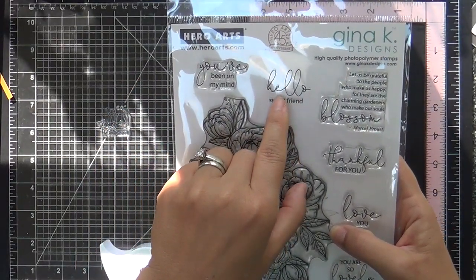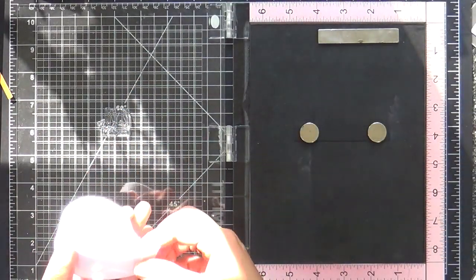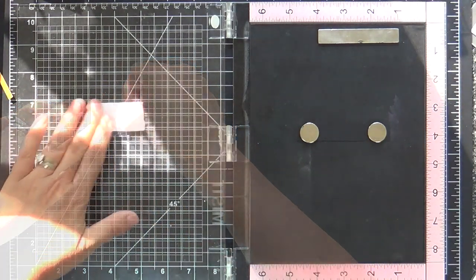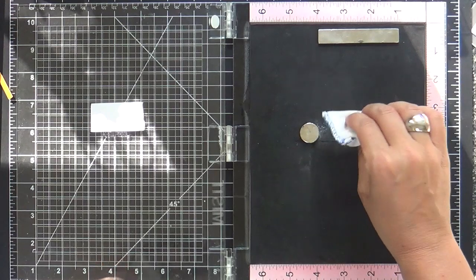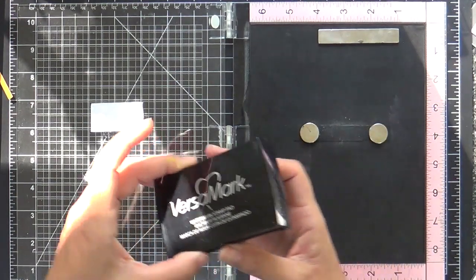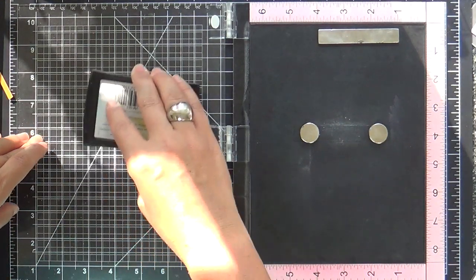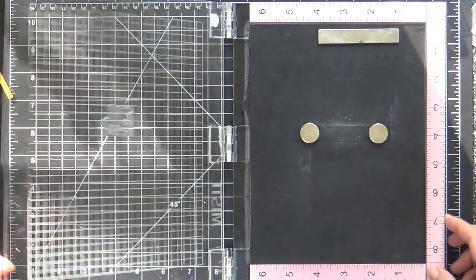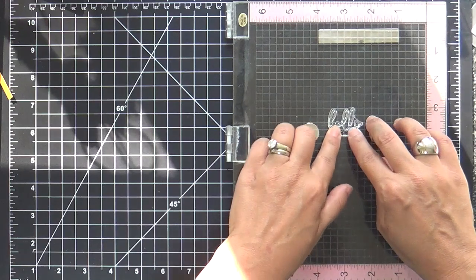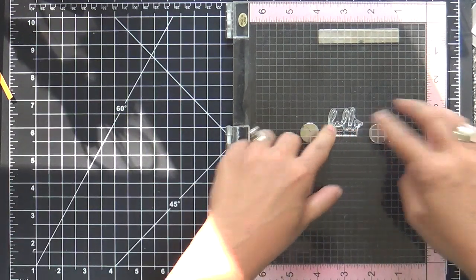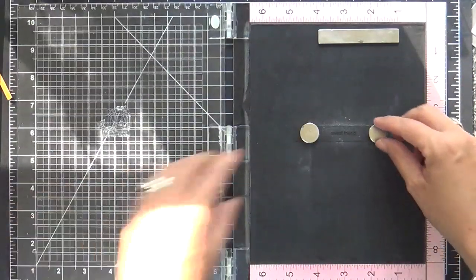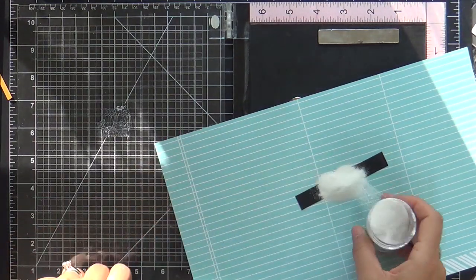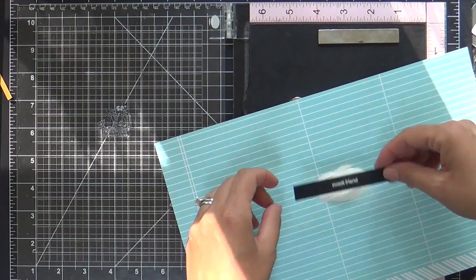Now for the sentiment, it says hello, sweet friend. I wanted to use that, but I didn't want the hello. So I'm going to mask it off, put some post-it tape over the hello, and I'm going to emboss only the sweet friend part. So this is kind of fun. I don't know if you've ever tried masking off your sentiments. Gives you a little more mileage. You can isolate certain words. And so I'm going to pour white embossing powder on this strip here of black cardstock. Heat that with a heat gun.